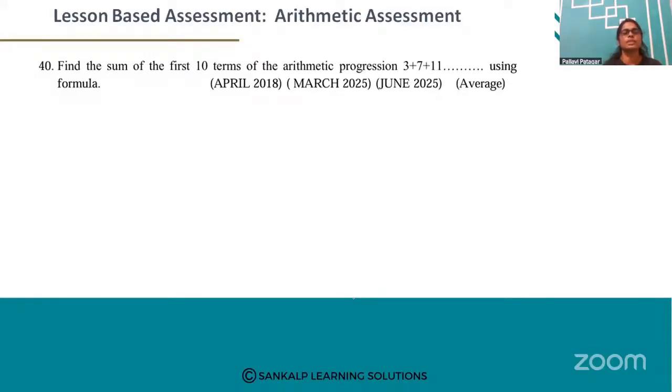Look at question number 40. Find the sum of the first 10 terms of AP 3 plus 7 plus 11 and so on using formula. First identify the values.